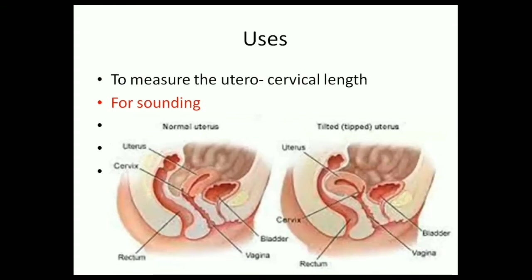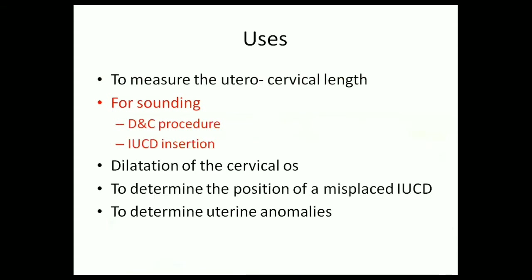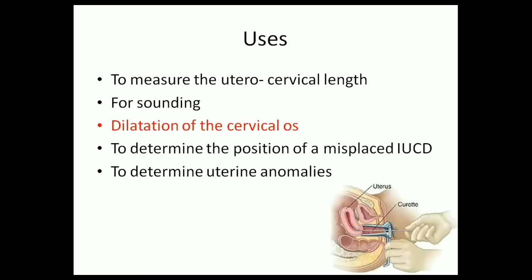Uterine sounding is done before doing procedures like dilatation and curettage and insertion of an intrauterine contraceptive device. Since we insert the uterine sound before doing any procedures, it is the first dilator of the cervix. Thus, another function of the uterine sound is dilatation of the cervical os.